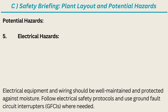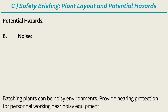5. Electrical Hazards — electrical equipment and wiring should be well maintained and protected against moisture. Follow electrical safety protocols and use ground fault circuit interrupters (GFCIs) where needed. 6. Noise — batching plants can be noisy environments. Provide hearing protection for personnel working near noisy equipment.